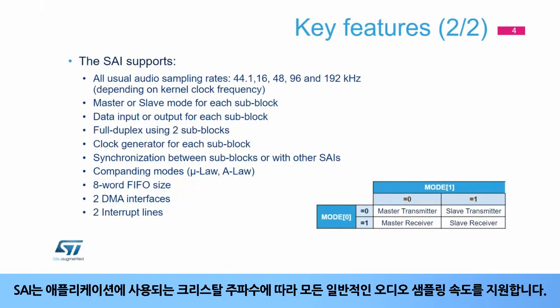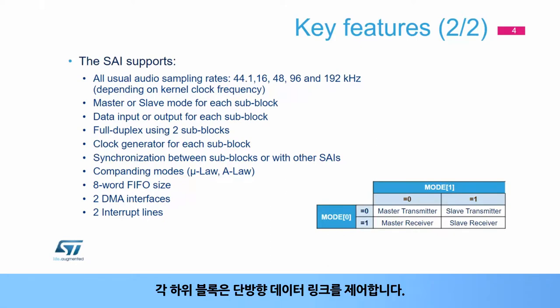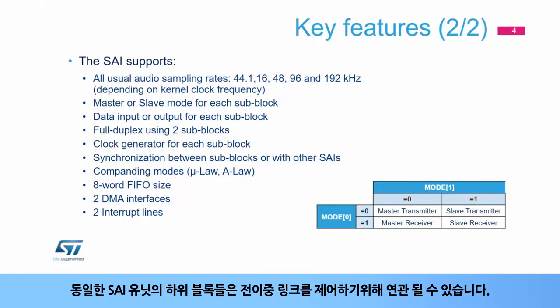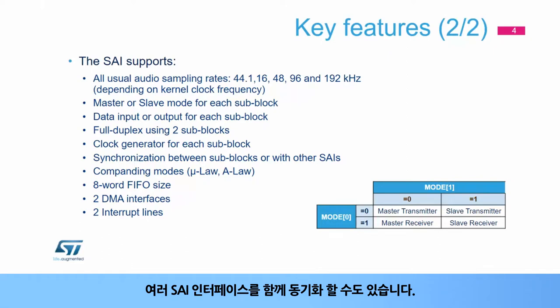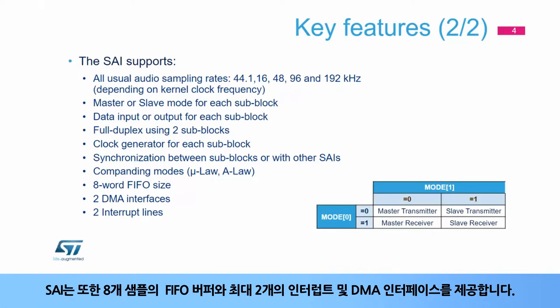The SAI supports all the usual audio sampling rates, according to the crystal frequency used for the application. The mode field of the SAI configuration register configures the subblock in master or slave mode, and in transmitter or receiver mode. Each subblock controls a unidirectional data link. The two subblocks of the same SAI unit can be associated to control a full duplex link, and it is also possible to synchronize several SAI interfaces together. Companding algorithms are implemented in the SAI to reduce the dynamic range of audio signals. The SAI also provides a FIFO buffer of eight samples, and up to two interrupts and DMA interfaces.